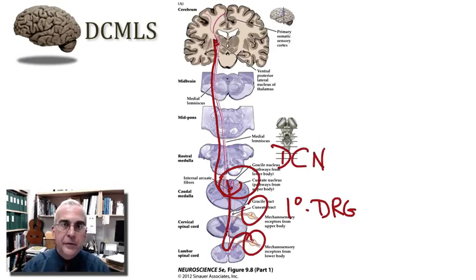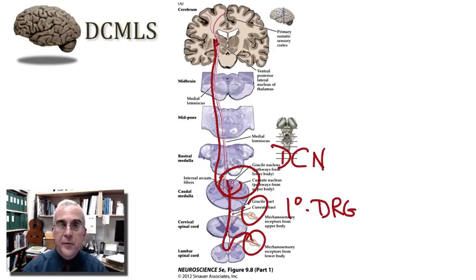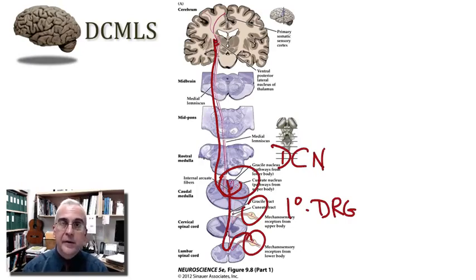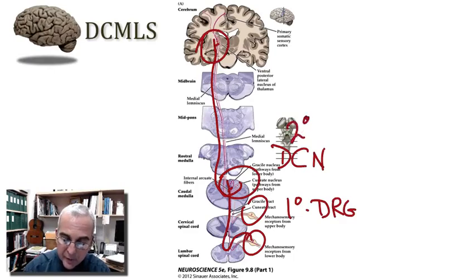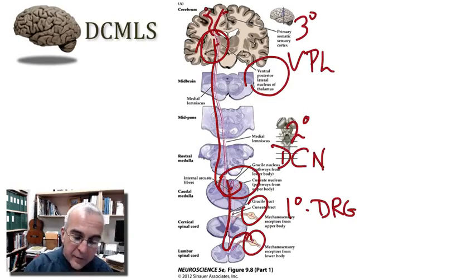For every pathway we consider, we want to remember that for the cerebral hemispheres there's a principle of contralateral representation that we must account for. In the case of the mechanosensory pathway, contralateral representation is established in the caudal medulla with the outgrowth of the second-order axon. It sweeps across the tegmentum and ascends the rest of the way through the brain stem, synapsing on the next neuron in the pathway — which is in the thalamus, specifically the ventral posterior lateral nucleus of the thalamus, or VPL. The dorsal column nuclei house our second-order neuron, and our third-order neuron is in the VPL. From there, the thalamic cells provide input up to the postcentral gyrus.